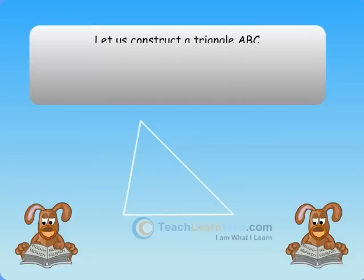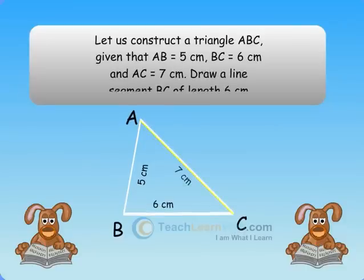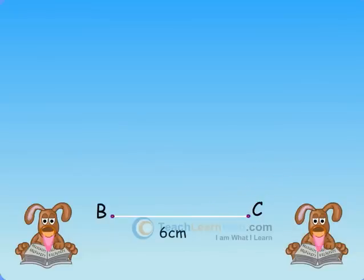Let us construct a triangle ABC given that AB is equal to 5 cm, BC is equal to 6 cm and AC is equal to 7 cm. Draw a line segment BC of length 6 cm.